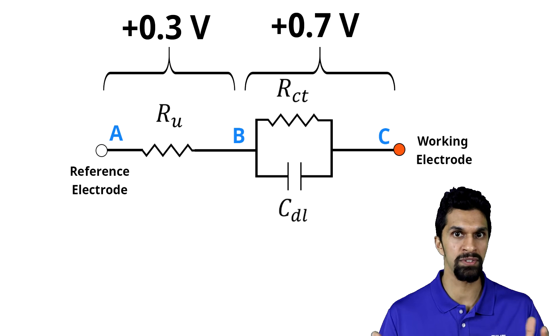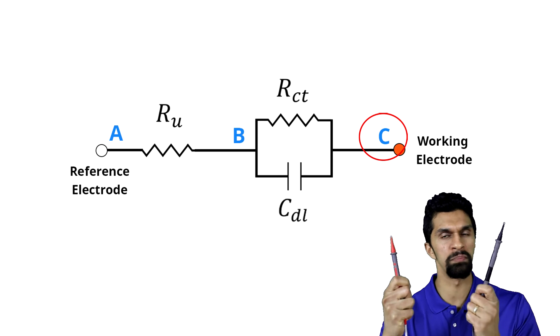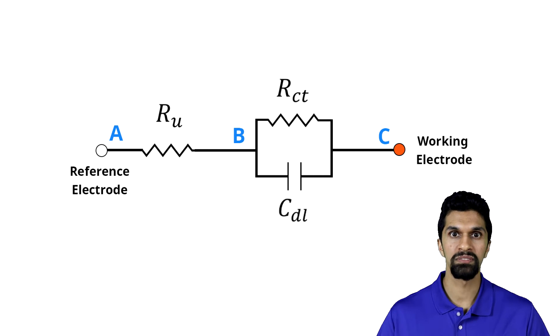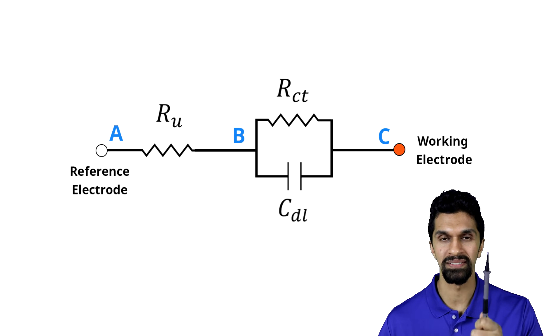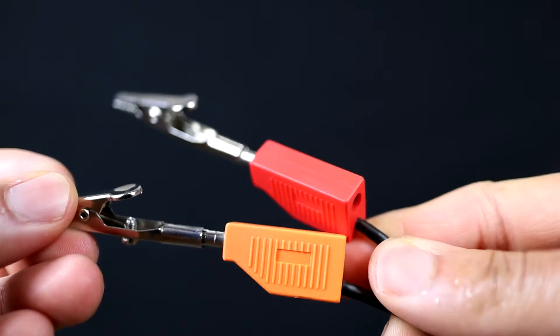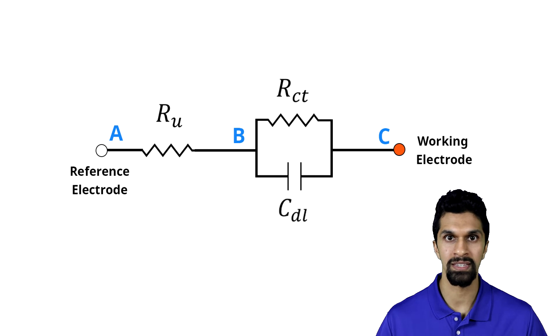This also applies to situations where you want to measure the potential. If I gave you a digital multimeter with two probes and asked you to measure the potential at the working electrode interface, I would take one probe and put it at point C and one probe at point B. But physically, I can't actually get my probe to point B. In our electrochemical system, the reference and the working sense leads are our two probes, and I can't physically get my reference electrode to point B — there will always be some solution resistance that gets in the way.